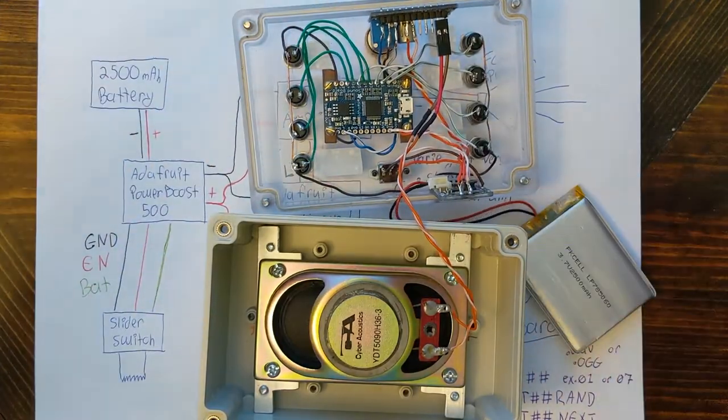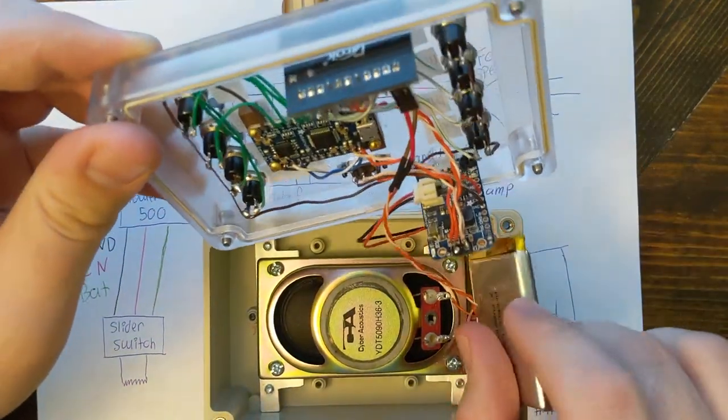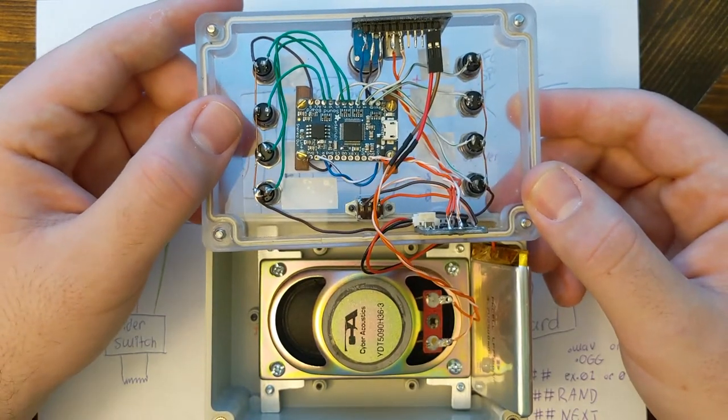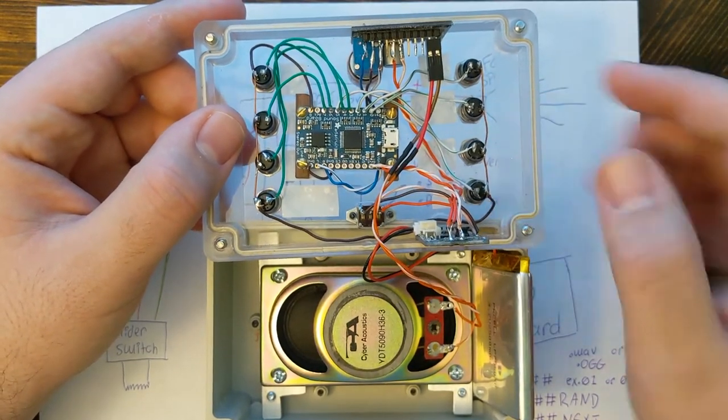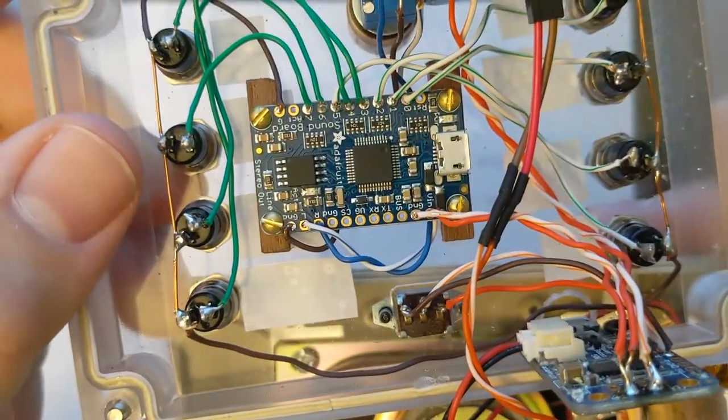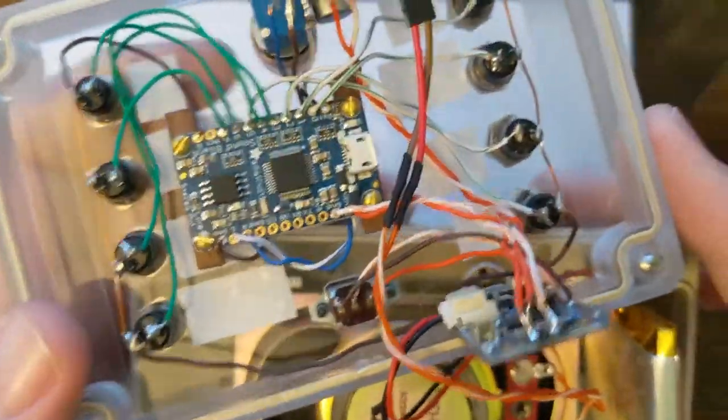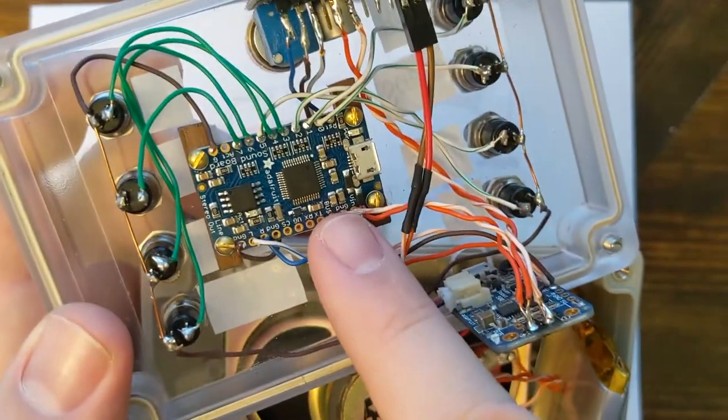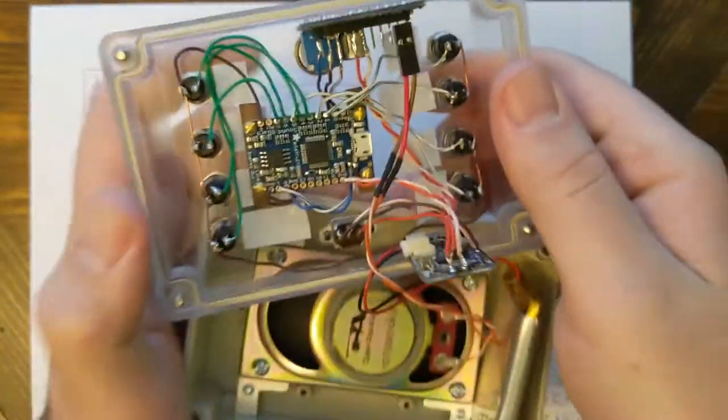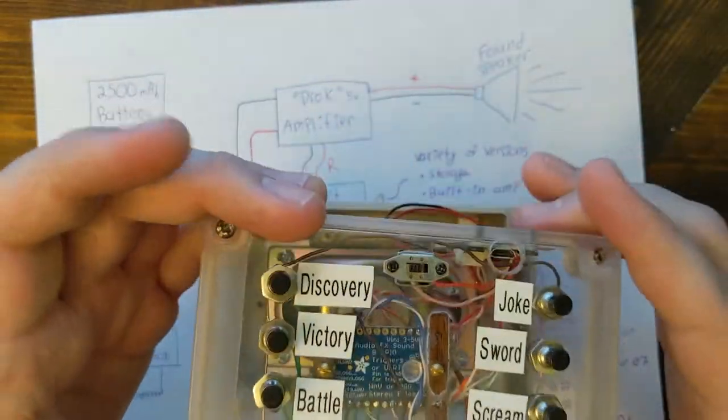Yeah, it's all pretty straightforward. It looks like a lot. But it's really only two or three boards. And they're all clearly labeled. So, here's power going in. Here's sound coming out. Here's leads to all the buttons.